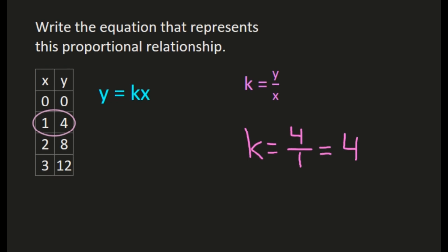And that's why if you can, you want to choose where x is 1 for your calculations. And now that I have a constant of proportionality of 4, I simply am going to take that constant of proportionality and put it into my equation for my line.